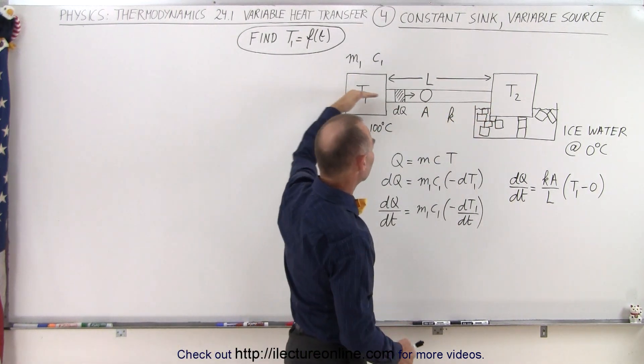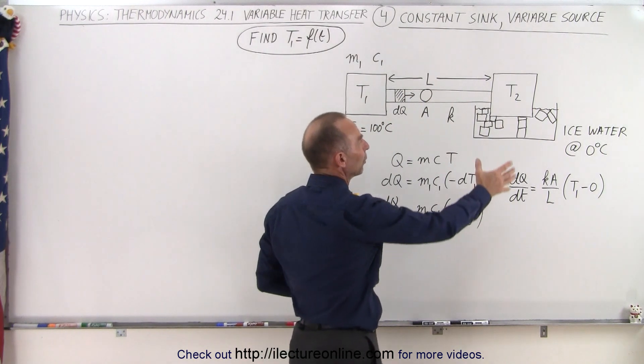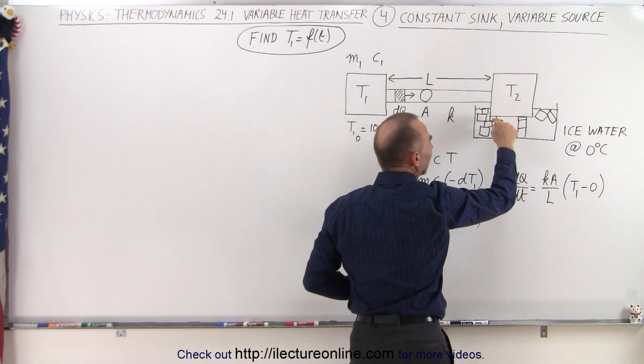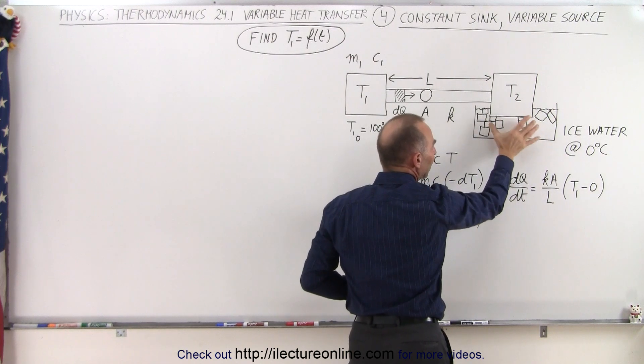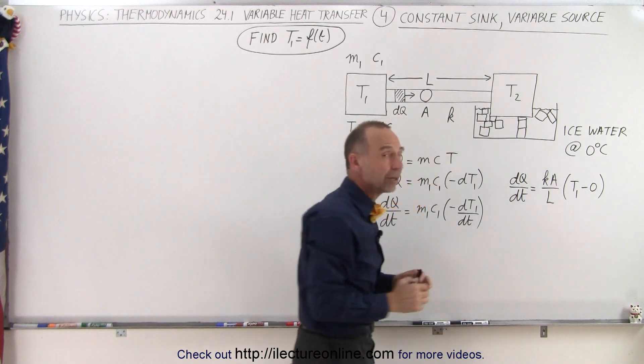So heat is traveling from T1 to T2. Now on the sink side, where the heat is being received, we're going to keep that in an ice bath, kept at 0 degrees centigrade. So T2 will be constant at 0 degrees centigrade.